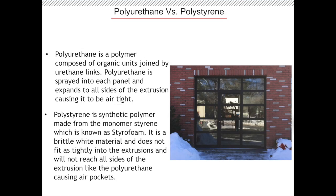There are two materials that can be used to insulate your overhead sectional door: polystyrene and polyurethane. Polyurethane is a polymer composed of organic units joined by urethane links. It is sprayed into each panel and expands to all sides of the extrusion, causing it to be airtight. Polystyrene is a synthetic polymer made from the monomer styrene, also known as styrofoam. It is a brittle white material that does not fit as tightly into the extrusions and will not reach all sides, causing air pockets.